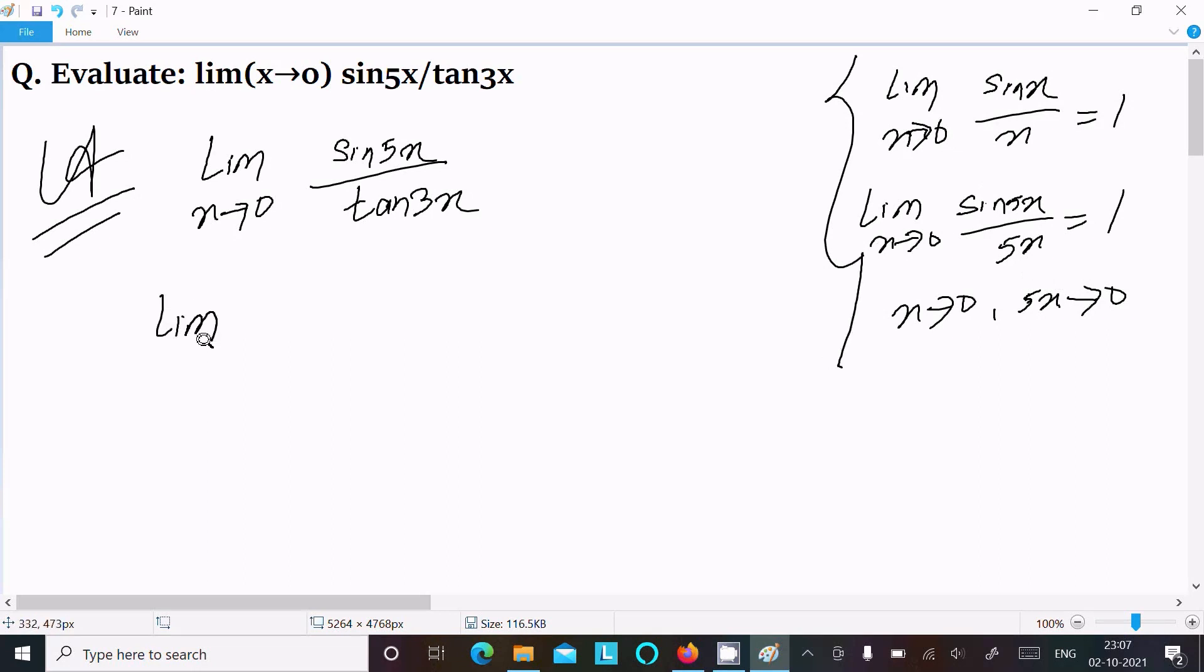Writing lim(x→0), for sin(5x) we can write 5x, then we need to multiply by 5x. Next, for 1 by tan(3x), we need to divide by 3x and multiply by 3x.